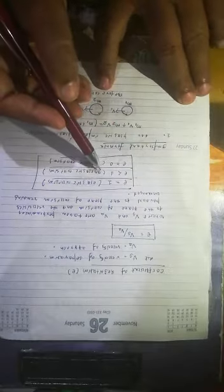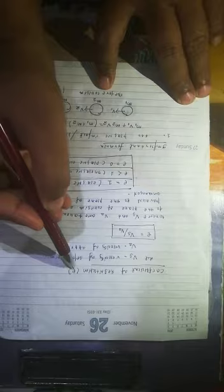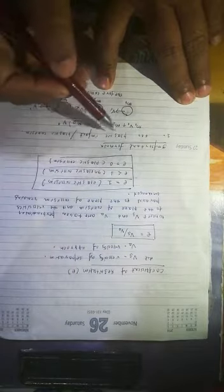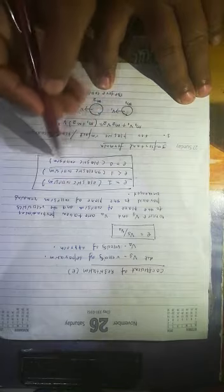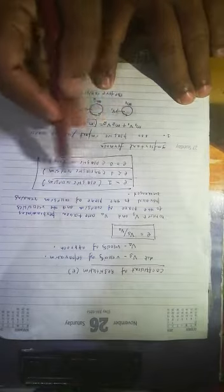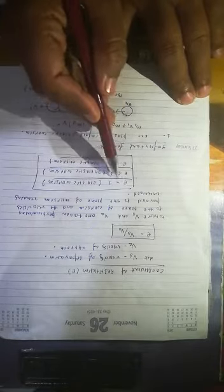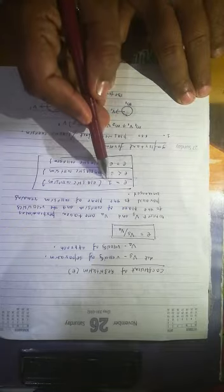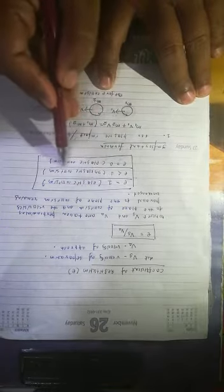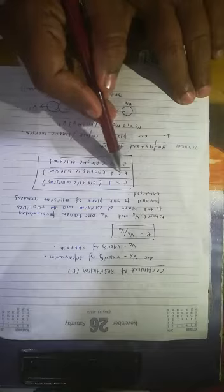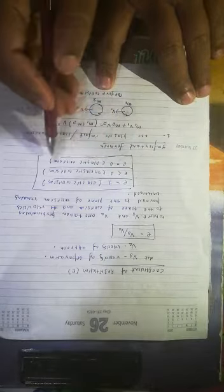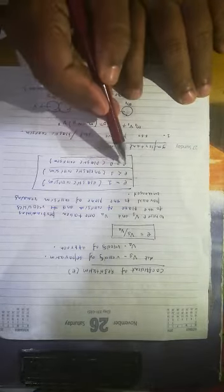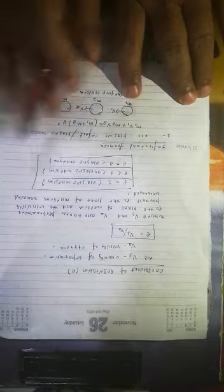Remember, a question will come: what is the value of coefficient of restitution for elastic collision, for inelastic collision, and for plastic collision? For elastic collision, the value of coefficient of restitution equals 1. For inelastic collision, the value is less than 1. And for plastic collision, the value of coefficient of restitution equals 0. You have to remember this.